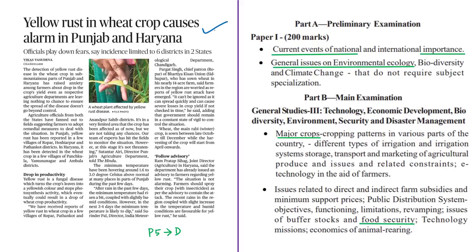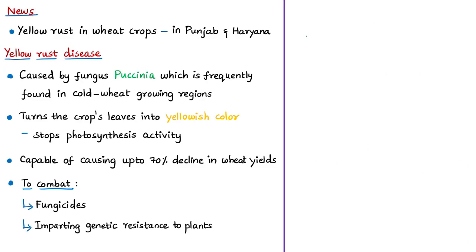This news article is about a fungal infection in wheat crops in the states of Punjab and Haryana. Fungi play various roles — both beneficial and harmful. They are used as food for human beings; some mushrooms are edible while others are dangerous. Fungi are also a threat to frogs, as affected frog species could become extinct. They can be a huge threat to crops, plants, animals, and humans, causing diseases like ringworm infections and aspergillosis.